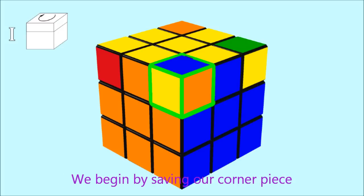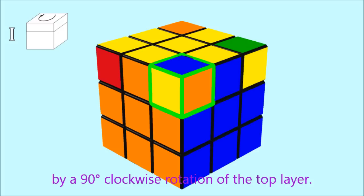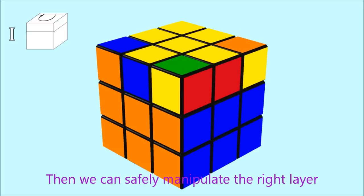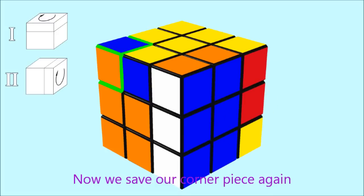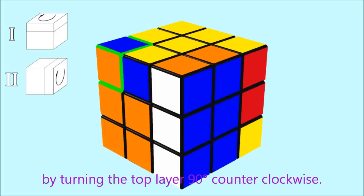We begin by saving our corner piece by a 90 degrees clockwise rotation of the top layer. Then we can safely manipulate the right layer by a 90 degrees clockwise rotation. Now we save our corner piece again by turning the top layer 90 degrees counterclockwise.